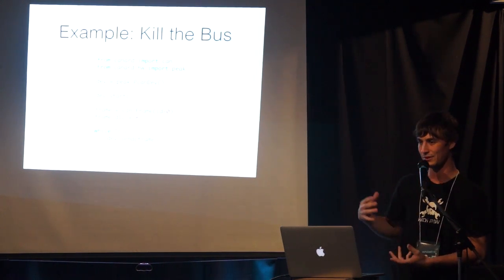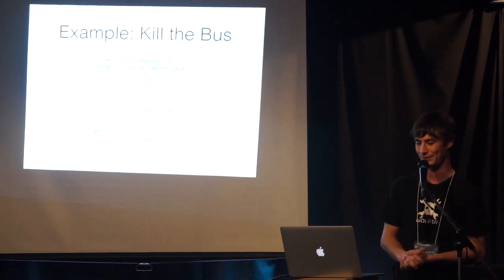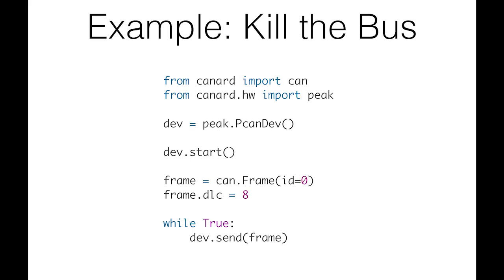Let me demonstrate what you can do with this library. The first example is killing the CAN bus by sending a message with ID 0. This actually works in real life. You import the library and a driver for the Peak device, start up the device with dev.start(), make a frame with ID 0, set the data length code to 8 with eight bytes of zeros, then while-True send that frame. I have done this by accident on a car — it was a Chevrolet Volt belonging to my boss, who was the CEO.